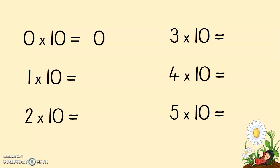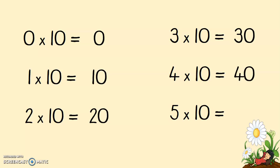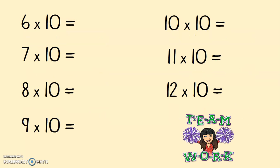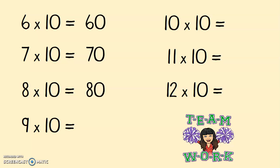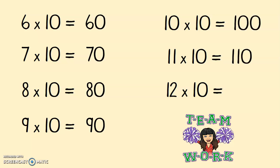0 times 10 equals 0. 1 times 10 equals 10. 2 times 10 equals 20. 3 times 10 equals 30. 4 times 10 equals 40. 5 times 10 equals 50. 6 times 10 equals 60. 7 times 10 equals 70. 8 times 10 equals 80. 9 times 10 equals 90. 10 times 10 equals 100. 11 times 10 equals 110. 12 times 10 equals 120.